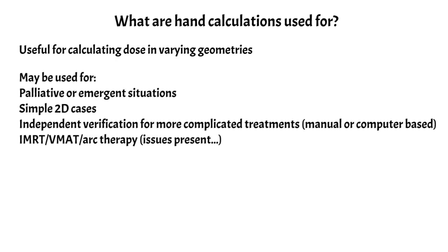But you really start to run into issues with arc therapy, because in arc therapy your SSD is constantly changing as the gantry is rotating, the depth is also changing across the beam, and the field size might be changing as well. So you might need to use some sort of average value for the field size. It's pretty hard to apply the hand calc formalism in some cases, and in fact it might actually break down completely.